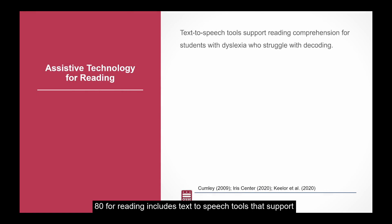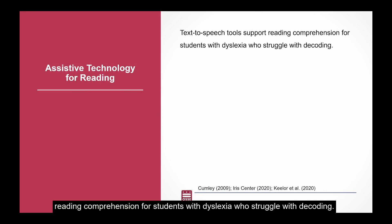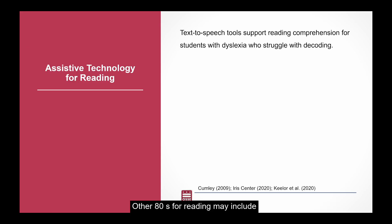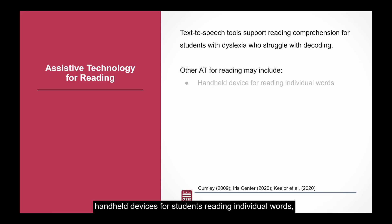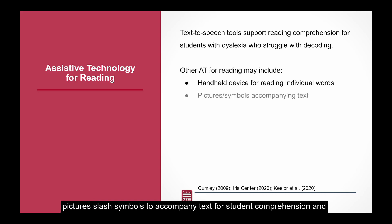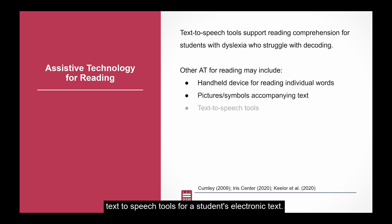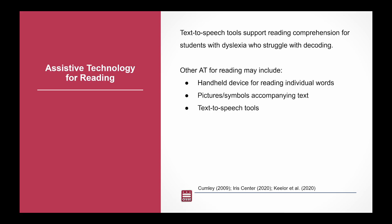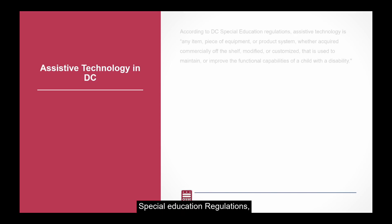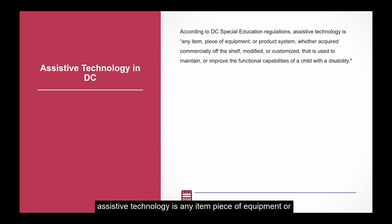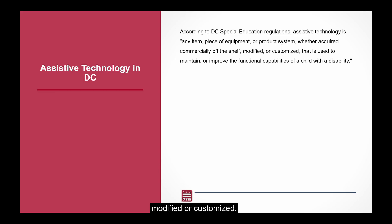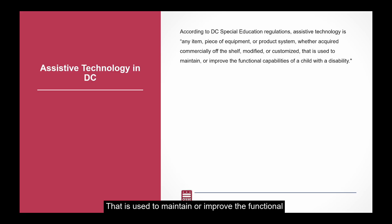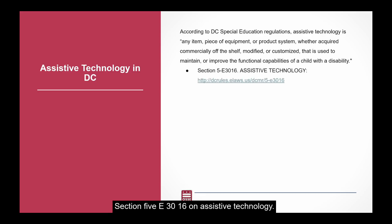AT for reading includes text-to-speech tools that support reading comprehension for students with dyslexia who struggle with decoding. Other ATs for reading may include handheld devices for students reading individual words, pictures/symbols to accompany text for student comprehension, and text-to-speech tools for a student's electronic text reading. According to DC Special Education Regulations, assistive technology is 'any item, piece of equipment, or product system, whether acquired commercially off-the-shelf, modified, or customized, that is used to maintain or improve the functional capabilities of a child with a disability.' Please see Section 5E 3016 on Assistive Technology, part of DC's Rules and Regulations, at the link in the slide.